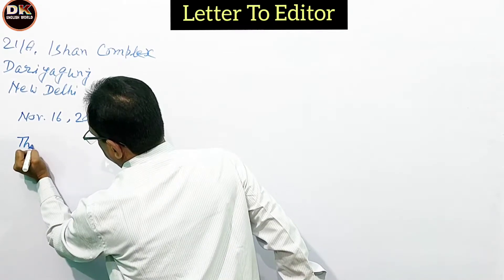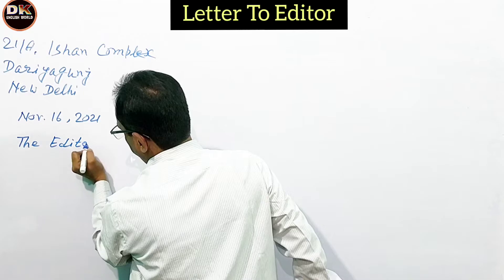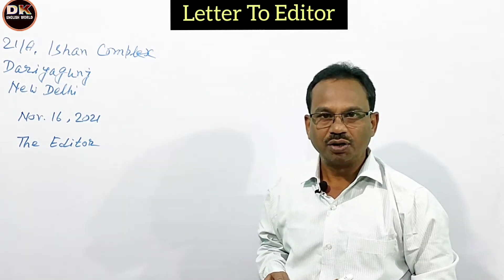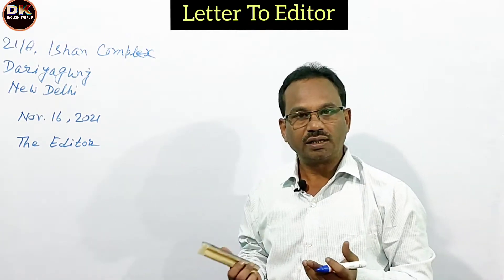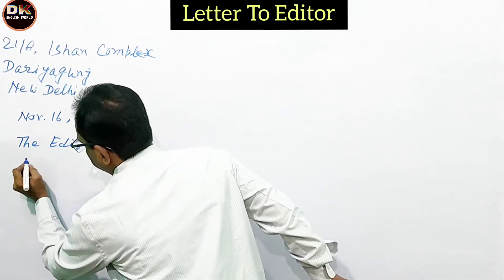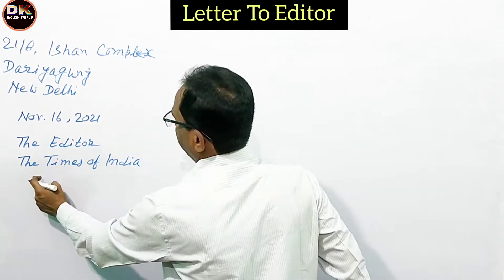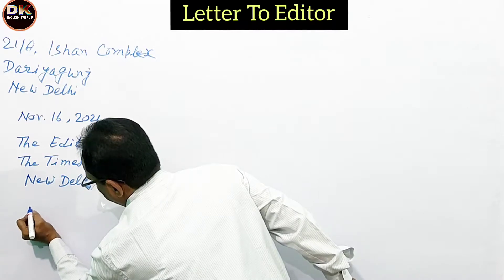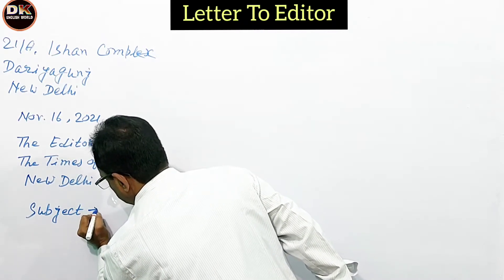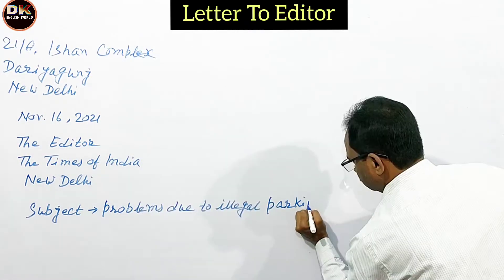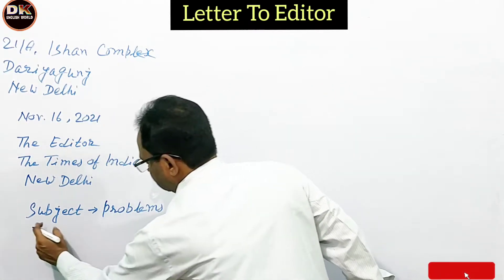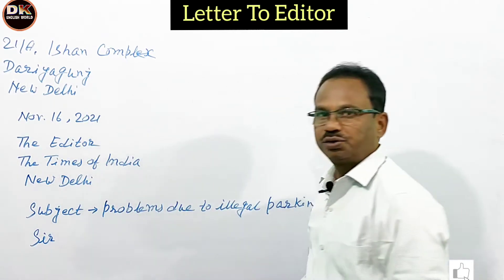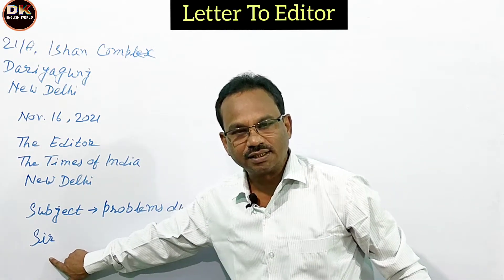Then write 'The Editor,' followed by the newspaper name — since the question says 'an English daily,' you choose a name, for example, The Times of India — and then the place: New Delhi. Leave a line, then write the subject: 'Problems due to illegal parking.' Leave another line, then write the salutation: 'Sir.' The body of the letter starts exactly under the word 'Sir.'